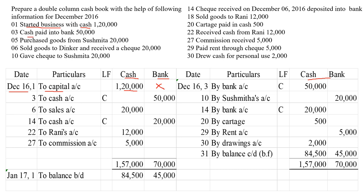Then cash paid into bank. When cash is paid into bank, both cash and bank accounts are getting affected. This happens under two situations: when cash is deposited and when cash is withdrawn. Under these two situations, both cash and bank accounts will be affected. This entry is called a contra entry. When cash is deposited into the bank, the journal entry will be bank account debit to cash account — bank will receive the amount and cash goes out of the business.